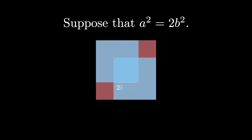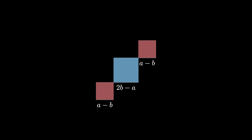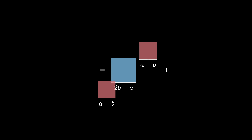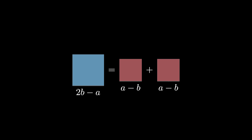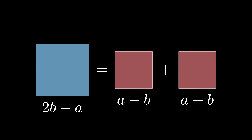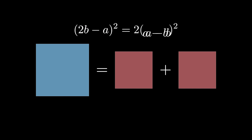We see that there is an overlap which is a square with side length 2b minus a, and the uncovered area is two squares with side length a minus b. According to the carpets theorem, the overlap region equals the uncovered region. This means that the quantity (2b minus a) squared equals two times the quantity (a minus b) squared.